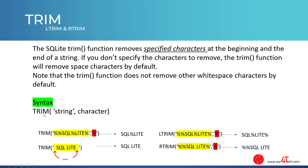The syntax is like this: you write Trim, between parentheses, the string, then you specify the character. For instance, we have the string 'SQLite' with some percentage symbols. When we use Trim and specify the percentage character, it removes only the percentage at the beginning and at the end of the string. It will not remove the percentage between the 'SQL' and 'lite' words. So the result will be like this.